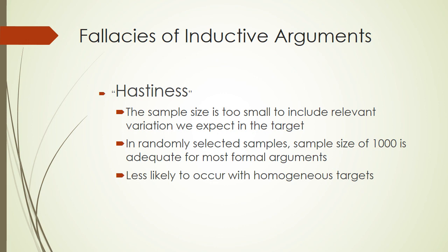Remember that hastiness is less likely to be a problem with a homogeneous target population, simply because with homogeneous target populations we're not worried about trying to include a lot of variation. Good luck with these concepts, and good luck on the lesson associated with this tutorial.